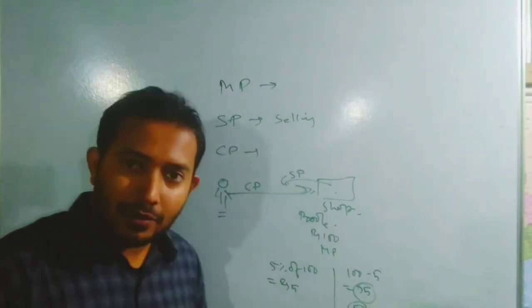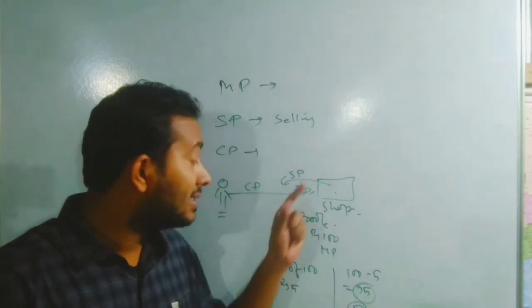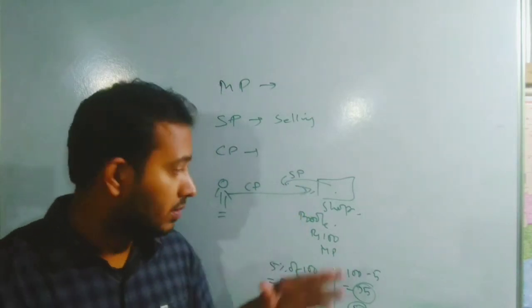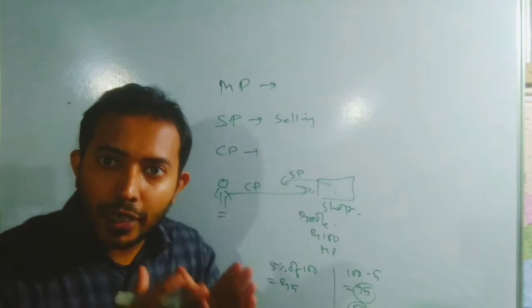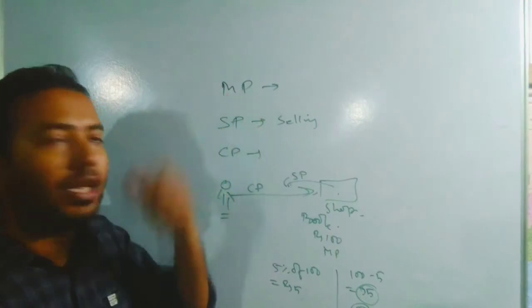Now we will take tax and tax will be on always selling price. Remember not on mark price, means after getting discount. If there is a discount then it is ok. If there is no discount your mark price becomes your selling price.